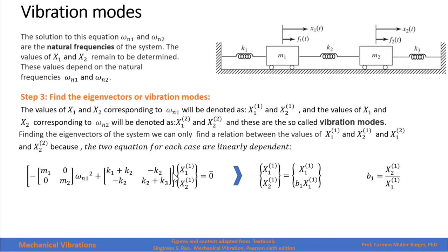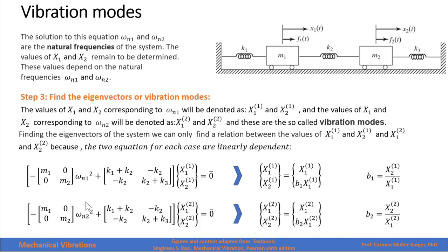Finding the eigenvectors can only yield a relation between those values because the two equations are linearly dependent — the first equation is the same as the second. So we assign an arbitrary value, for example 1, to x1 superscript 1 and solve for x2 superscript 1. The second amplitude is always a function of the first, meaning the motion of the two masses is related in the first mode. We repeat this for the second natural frequency to find another relation for the second mode.